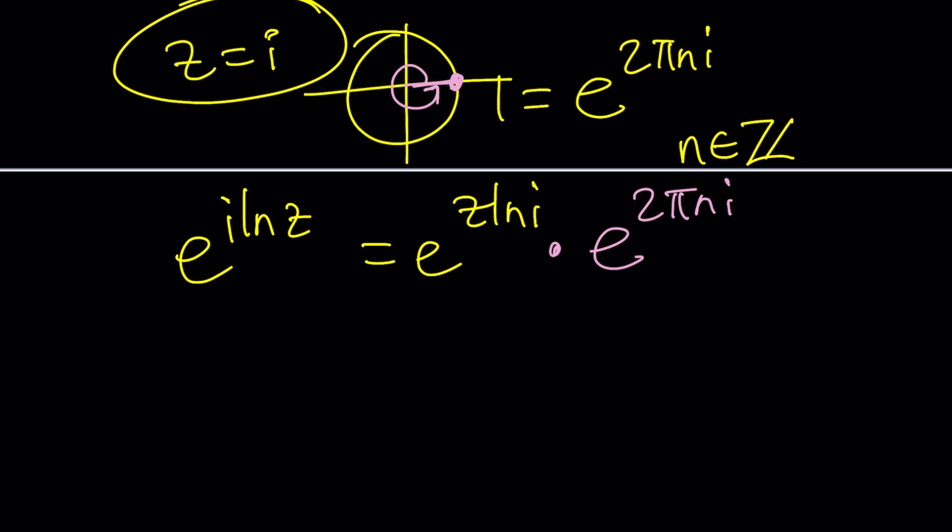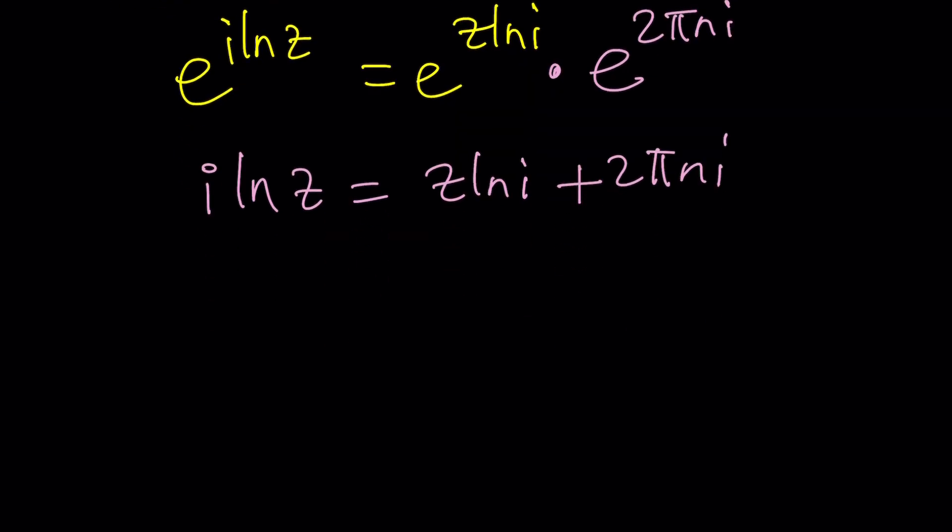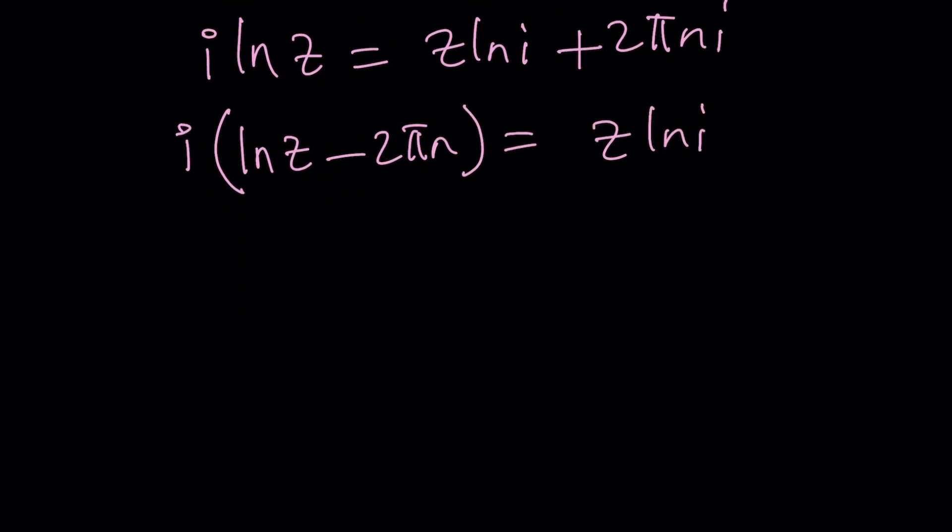So that means we can actually take an equation like this and multiply one side by e to the power 2 pi n i because it's 1. Why do you not multiply both sides? Because that will be meaningless. It's like adding the same number to both sides, right? So now this gives us something different. i ln z equals z ln i plus, because we're going to add the exponents, 2 pi n i. Now our goal is to solve for z. Well, one thing that I can definitely do is bring the i's together. Maybe write the i times ln z minus 2 pi n and then set it equal to z ln i. Okay, I think at this point we need to talk about ln i. What is ln i, right?